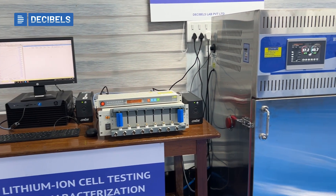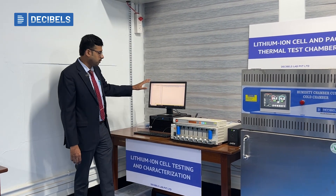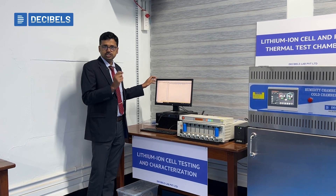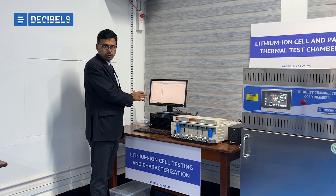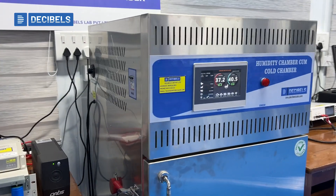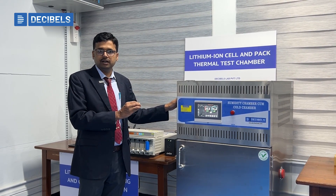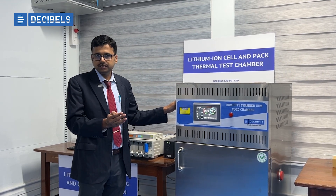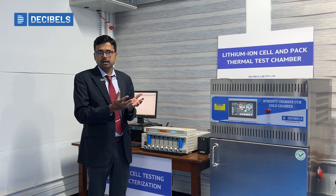We will now move on to the next setup at our EVCOC at KLSGIT, which is Lithium Ion Cell Testing and Cell Characterization. Here we have a battery testing system wherein eight cells can be tested simultaneously. Eight different tests can be done and data — including voltage, current, charging and discharging currents, and SOC — can be seen over the system. Testing can be done from a few hours to a few days and data can be stored. Testing can be done at room temperature as well as at different climatic conditions using the environmental chamber, ranging from minus 20 degrees Celsius to plus 80 degrees Celsius and at different humidity levels, enabling more realistic battery testing conditions.